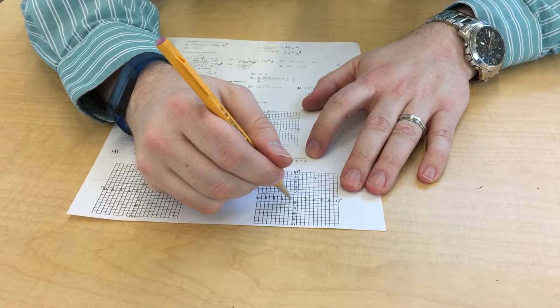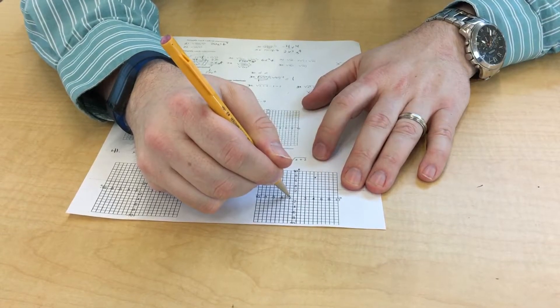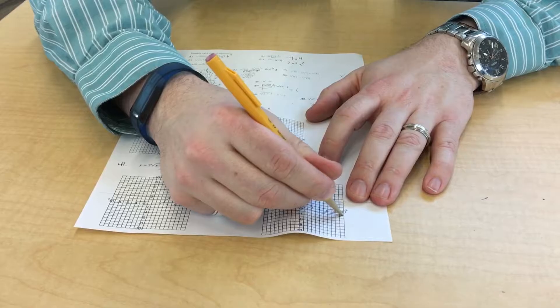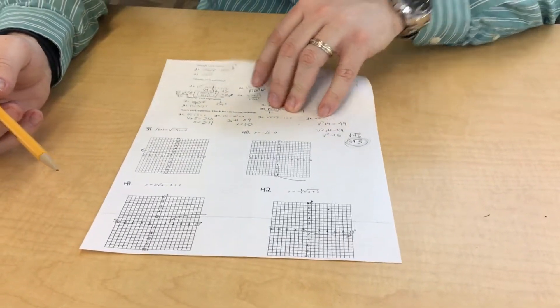And then this is going to go 2 to the left and flipped over, and then 1/4. So it's compressed. So to the left, flipped over, compressed, kind of like that. Again, not anything too onerous, not anything too crazy.